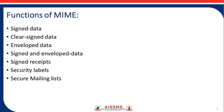Next is envelope data, which encrypts the contents where a key is used and the receiver gets the public key. Next is signed and envelope data, which is a combination of both signed and envelope data, and it has the capacity to enclose the signed data.